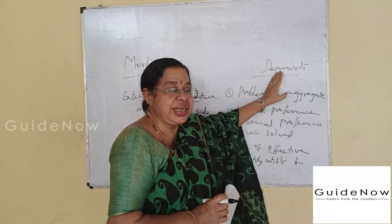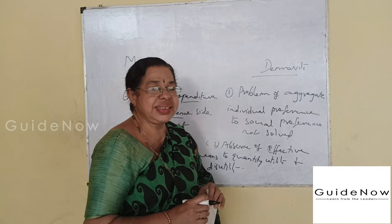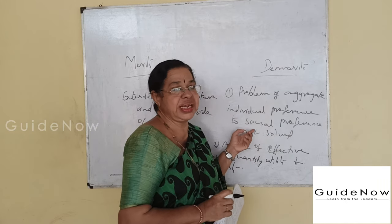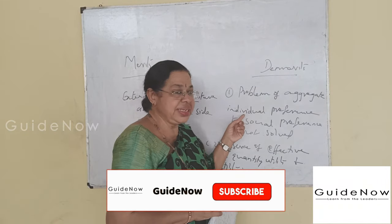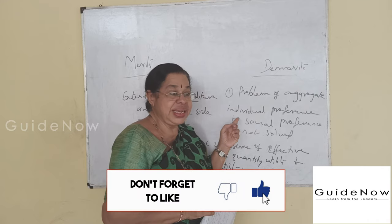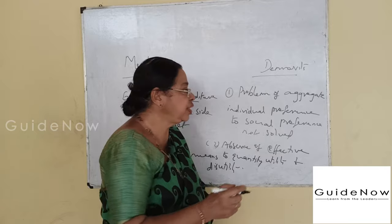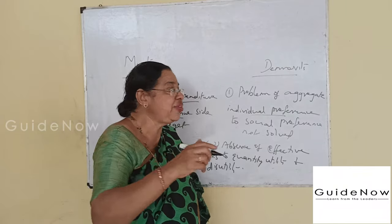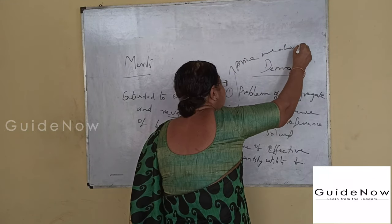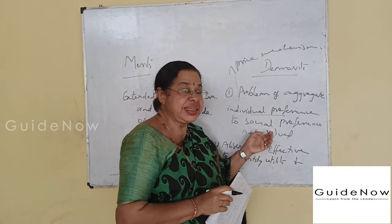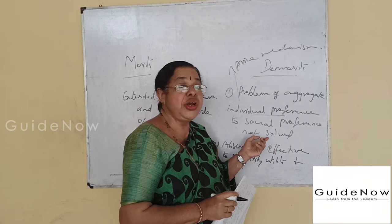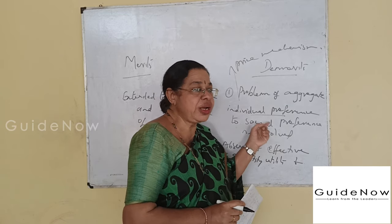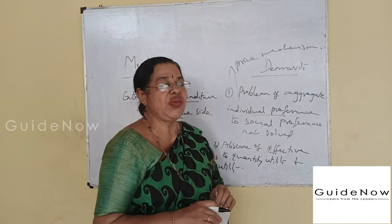Regarding the demerits or difficulties of the marginal utility approach: the first problem is the aggregation of individual preference to social preference — this is not solved in the case of the marginal utility approach. Individual preferences are revealed through the price mechanism or market mechanism, but aggregating individual preferences to arrive at social preference cannot be resolved using the marginal utility approach.